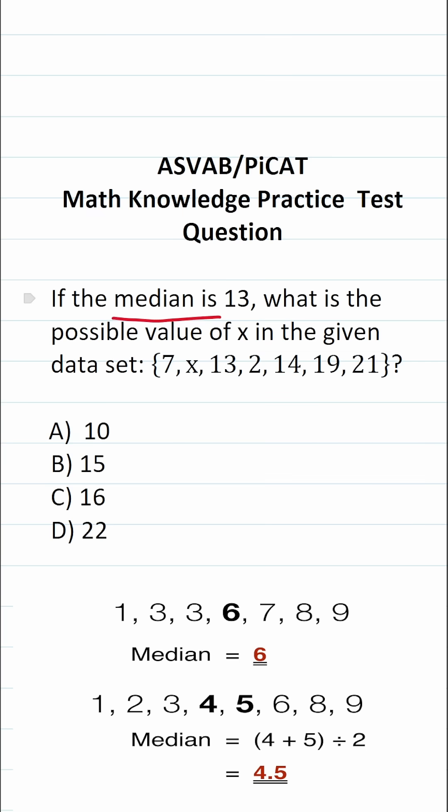In order to calculate median, you have to pay close attention to how many values are in the given data set. If you have an odd number of values, you're going to arrange the numbers from least to greatest, and then you're going to cross those numbers off one at each end until you get to the middle or median number.